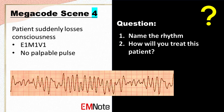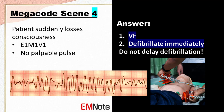Name the rhythm. How will you treat this patient? The ECG strip shows ventricular fibrillation (VF). VF is a life-threatening arrhythmia that requires immediate defibrillation. Ensure that the defibrillator is charged to the appropriate energy level, typically 200 joules for adults. Do not delay defibrillation — it is the only effective treatment for VF.